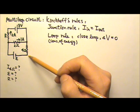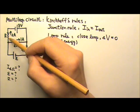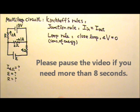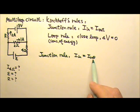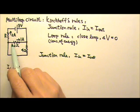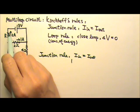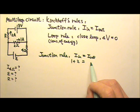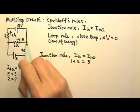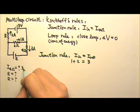Let's look at this example. Please find the current in the 4-ohm resistor, the EMF of this battery, and the resistance of this resistor. We can start with the junction rule — the current going in equals the current going out. Looking at this junction, there's one amp going in and two amps also going in. That means we need three amps to come out of the junction. So the current in the 4-ohm resistor is three amps going down.